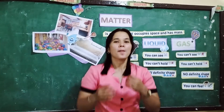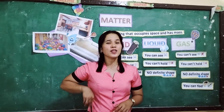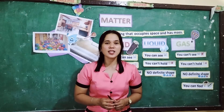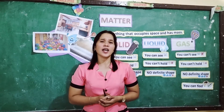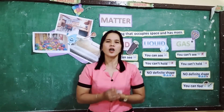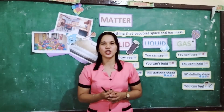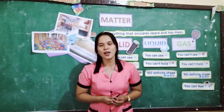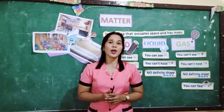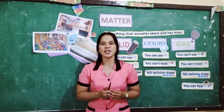For your assessment, kindly get your answer sheet and answer the activity by filling in the blank box, identifying the different objects and where they belong. The time is up — kindly pass your answer sheet. For your assignment, draw at least five examples of a solid, liquid, and gas, and write down the name beside the object.